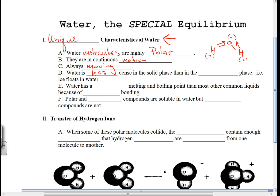All right, water is less dense in the solid phase than in the liquid phase. All right, for example, ice floats in water.